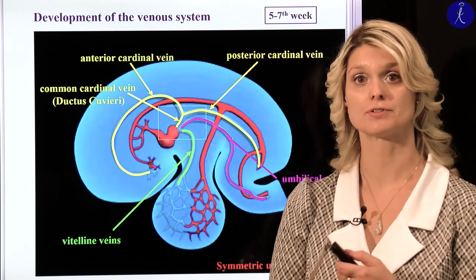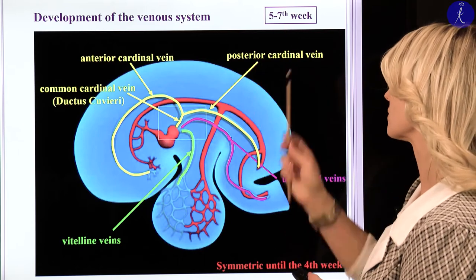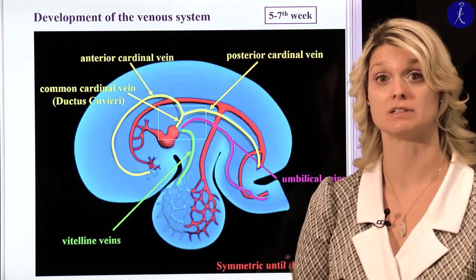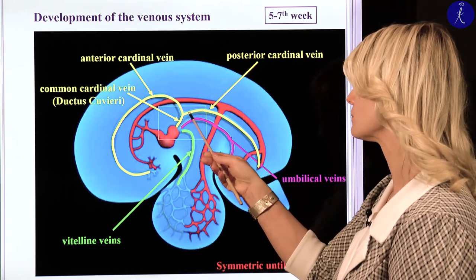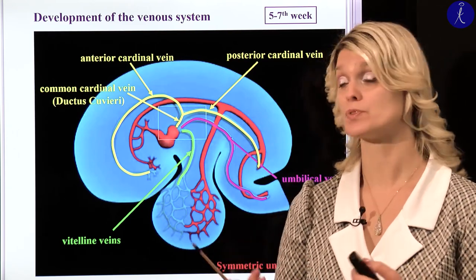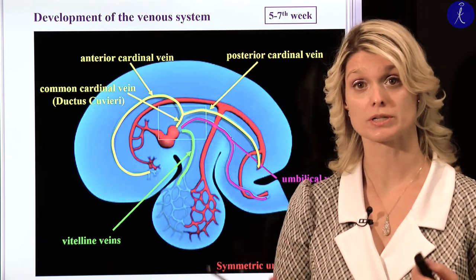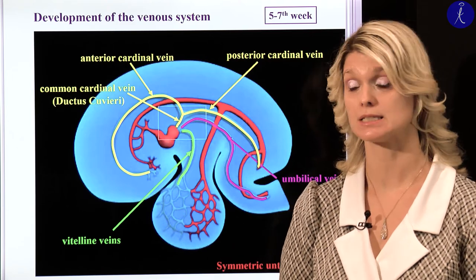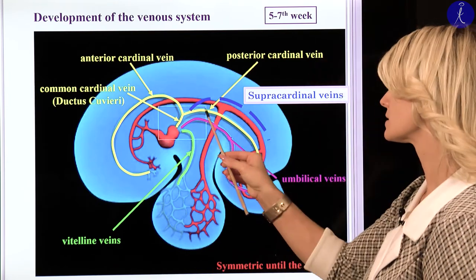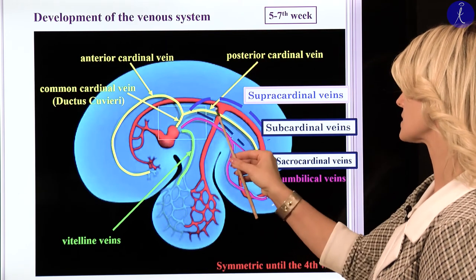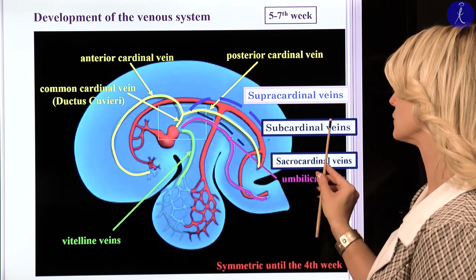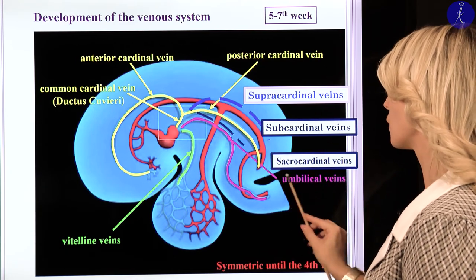After the fourth week, during the fifth to seventh week, we need additional veins because the vitelline veins, the umbilical veins, and the posterior cardinal veins are closed. We need other venous systems to drain the body wall, the organs of the abdominal cavity, and the lower extremities. That's why we develop new venous systems: the supracardinal veins, the subcardinal veins, and the sacrocardinal veins. They will drain the kidney, the gonads, and the lower extremities.